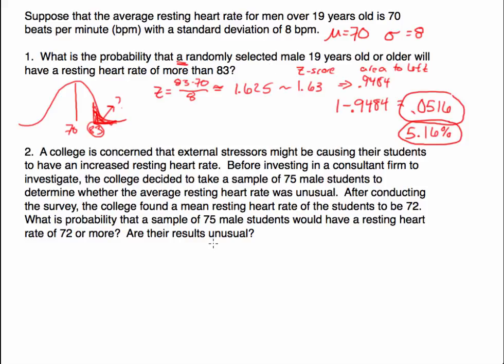Down below we're going to see it's a little different. A college is concerned about external stressors that might be causing their students to have an increased resting heart rate. Before they decide to hire someone to investigate, they decide to take a sample of 75 male students and look at their average resting heart rate to determine whether or not that was unusual.